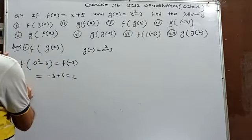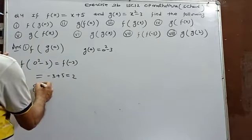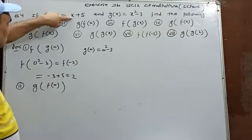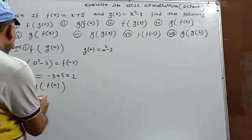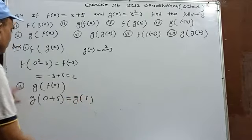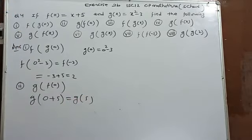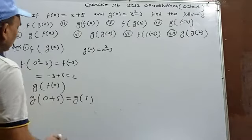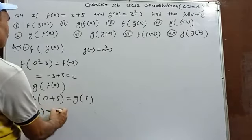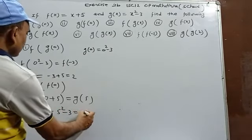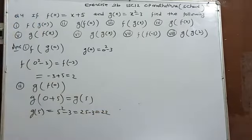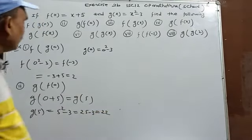gf(0): first f(0)=0+5=5, then g(5)=5²-3=25-3=22. So gf(0)=22.